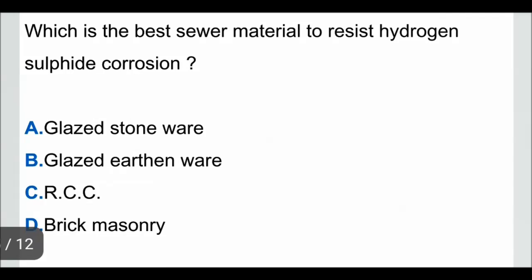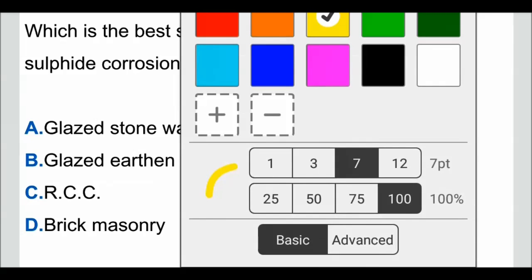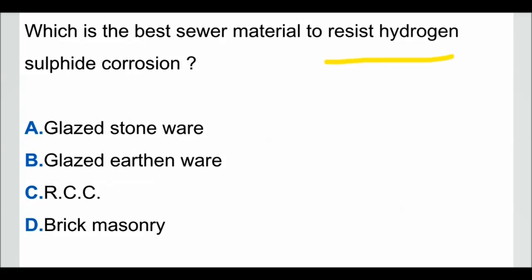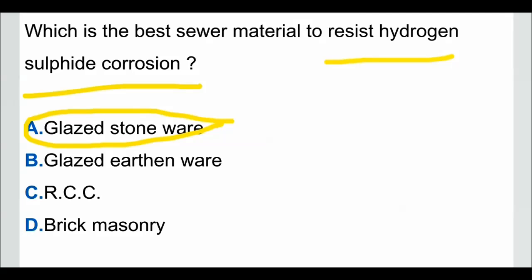Question 4: which is the best sewer material to resist hydrogen sulfide corrosion? While concrete and steel materials cannot resist hydrogen sulfide corrosion, the best sewer material to resist hydrogen sulfide corrosion is glassed stoneware. So the correct answer is option A — glassed stoneware. RCC, concrete, and steel cannot resist hydrogen sulfide corrosion.